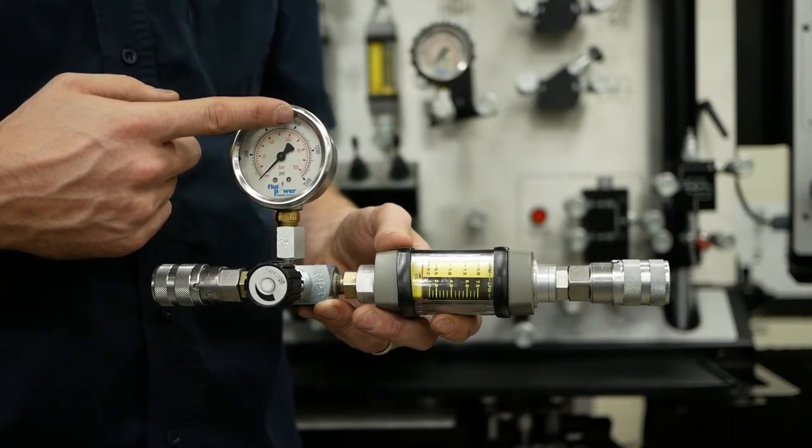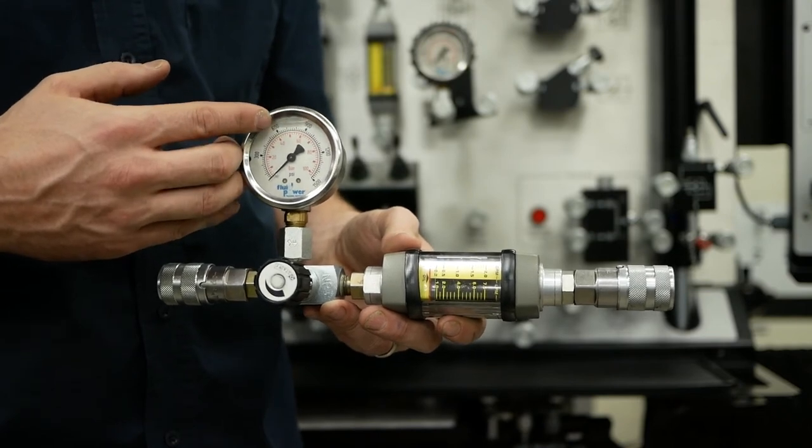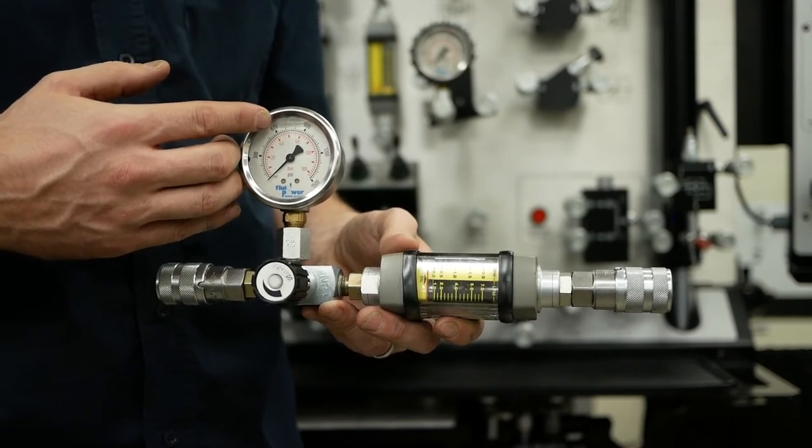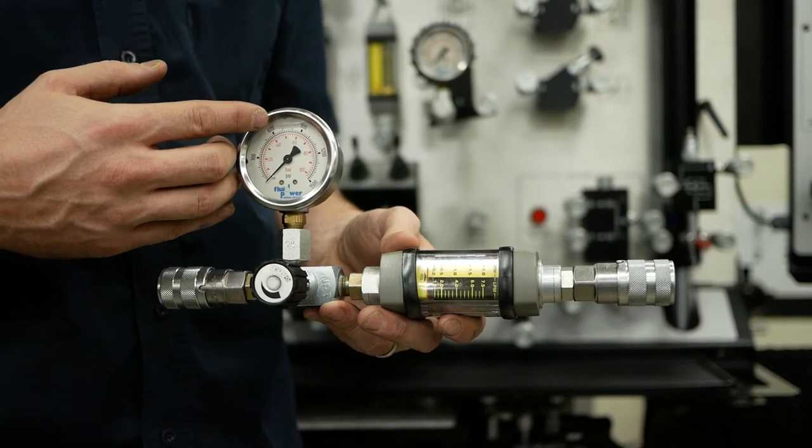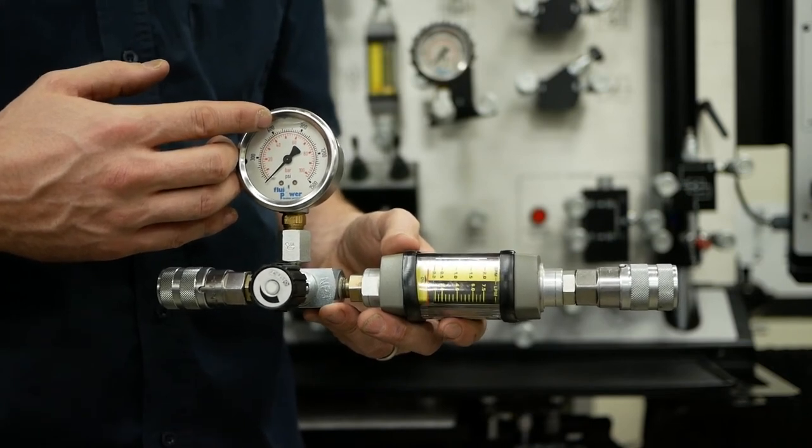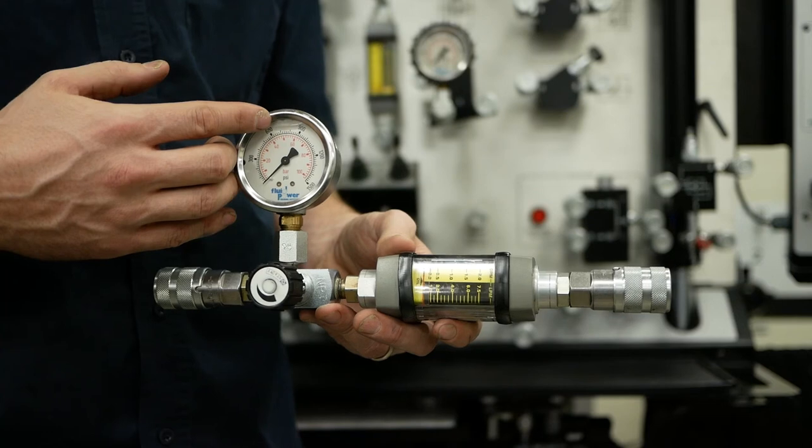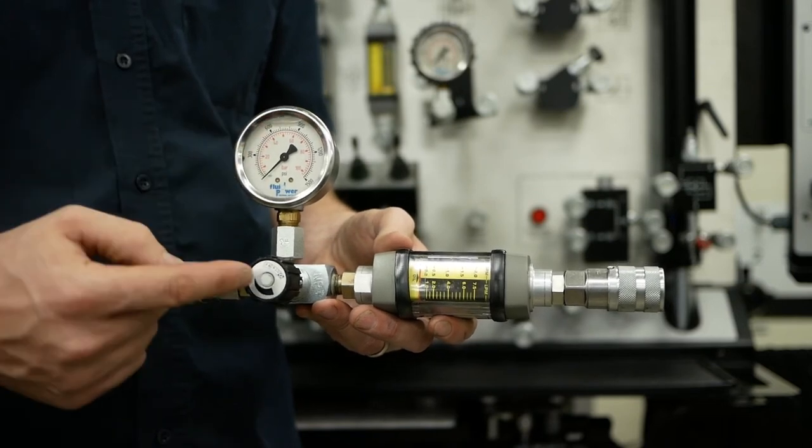As we measure its volumetric efficiency drop from low pressure to high pressure, of course that volumetric efficiency drop is happening because the internal leakage is getting greater with a greater pressure drop as we create the restriction on the outlet side of the pump port.